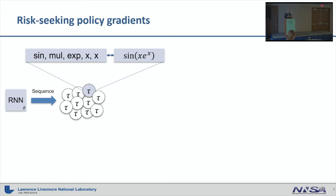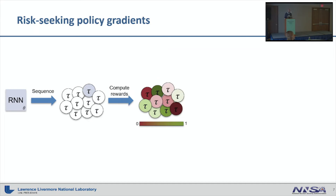I want to introduce a method that helped improve our results a lot: risk-seeking policy gradient. This is not limited to symbolic regression or even discrete optimization — in fact, this policy gradient can be applied to any reinforcement learning task. The basic idea is that instead of using the average performance as a training signal, we use the best-case performance. In practice, we first sample a batch of sequences from the recurrent neural network at random, compute the rewards for each sequence, and then select only the best epsilon-performing sequences according to our reward function and calculate the epsilon reward quantile.